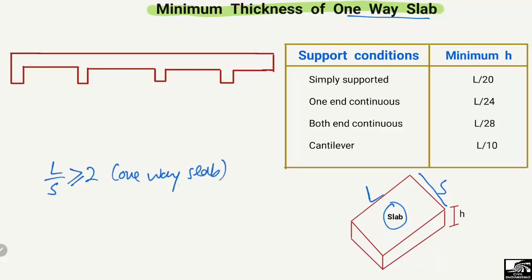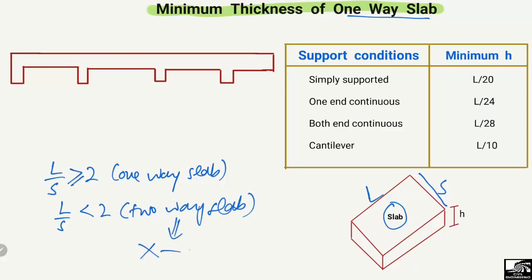A one-way slab can only be designed in one direction, and we provide the main reinforcement only in one direction. If the longer-to-shorter span ratio is less than two, then it will be a two-way slab, and in a two-way slab the main reinforcement will be provided in both directions — the x-direction as well as the y-direction — while in the one-way slab, main reinforcement is provided only in either x or y direction.